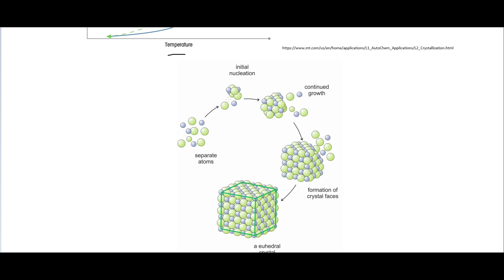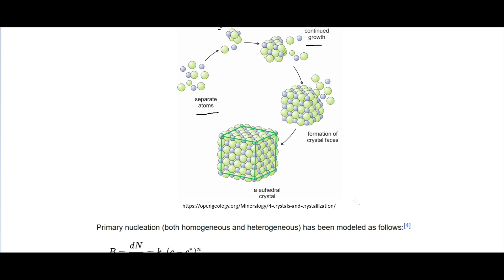Nucleation is when atoms, molecules, or ions first start coming together. Then we have crystal growth, which is when you keep adding more of these molecules onto your nucleation point and start forming larger crystals.